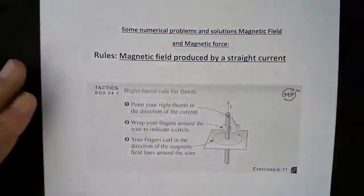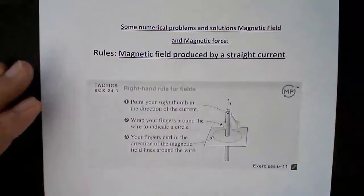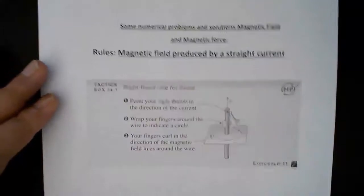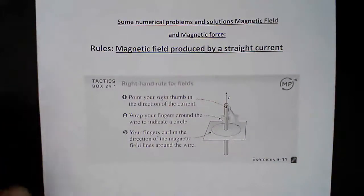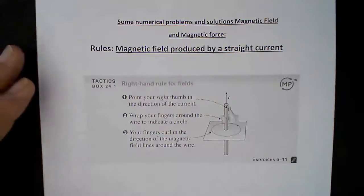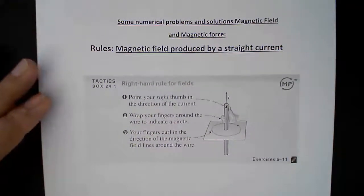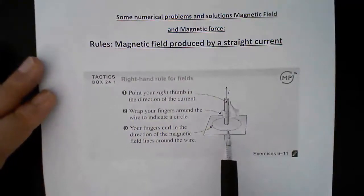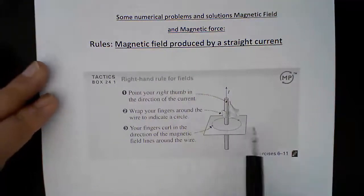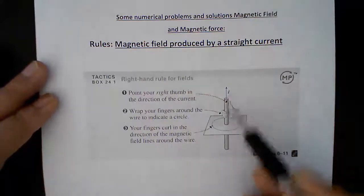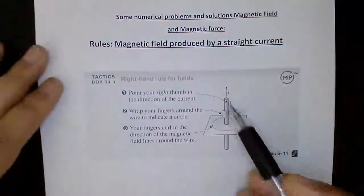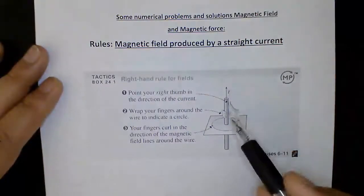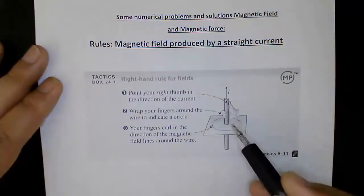These are some sample example problems on magnetic field and magnetic force. Before you solve the magnetic field and force problems, there are a couple of rules you need to understand. The very first rule is called the right-hand thumb rule, and it finds the direction of the magnetic field due to a long straight wire. If you have a long straight wire carrying current in the upward direction, the magnetic field will be in a circular pattern around it.